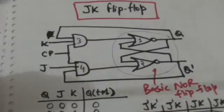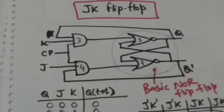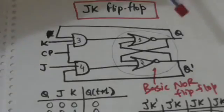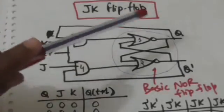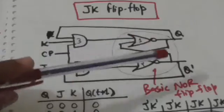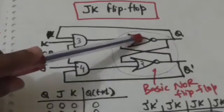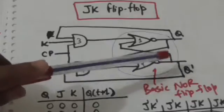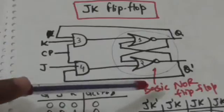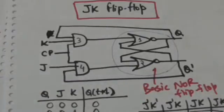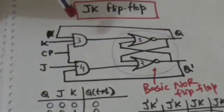Q gives the normal value of the bit stored in the flip-flop and Q-not gives the complement value of the bit stored in the flip-flop. The state of the flip-flop is determined by the value of Q. It consists of a basic NOR flip-flop — gate number one and gate number two — which form a basic NOR flip-flop.